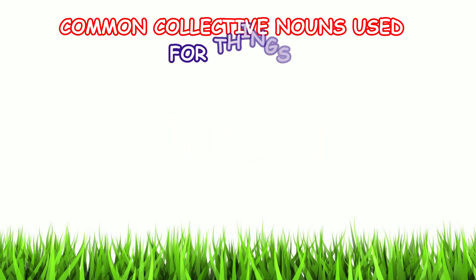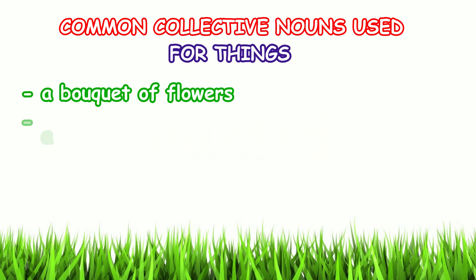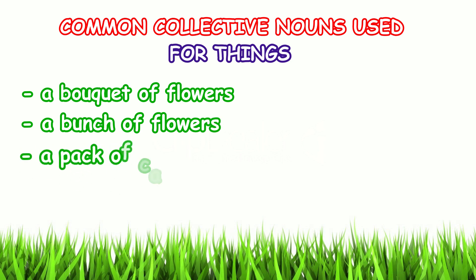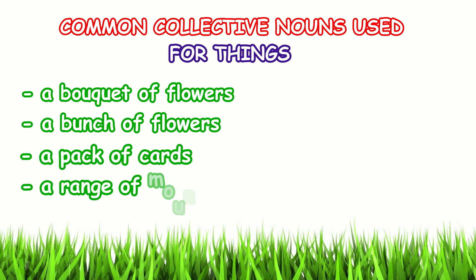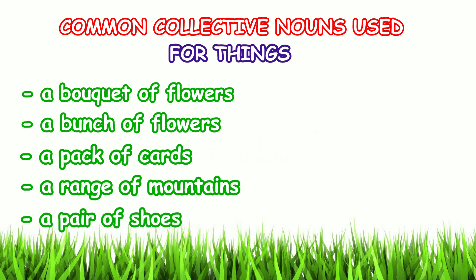Common collective nouns used for things: a bouquet of flowers, a bunch of flowers, a pack of cards, a range of mountains, a pair of shoes. The underlined words — bouquet, bunch, pack, range, and pair — are the collective nouns.